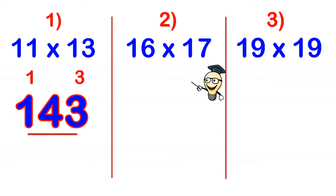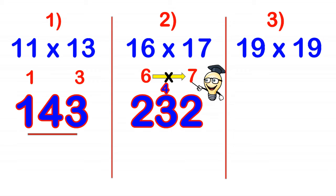Number 2, 16 times 17. So the 16 is 6 away from 10 and the 17 is 7 away from 10. And then adding diagonally either way, 17 plus 6 gives us 23, which is the same as 16 plus 7. And then multiplying these distances, so 6 times 7 gives us 42. Put down the 2 and we carry the 4. Add the 4 to the 3 and that gives us 272.